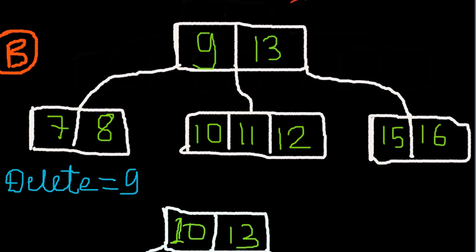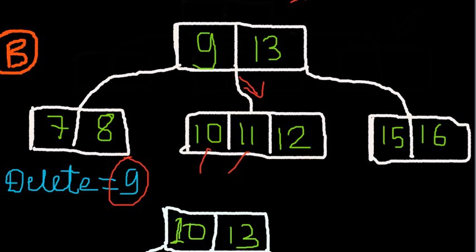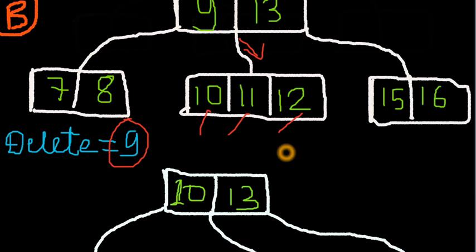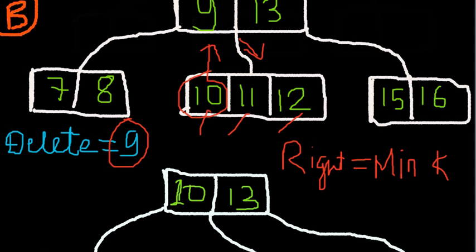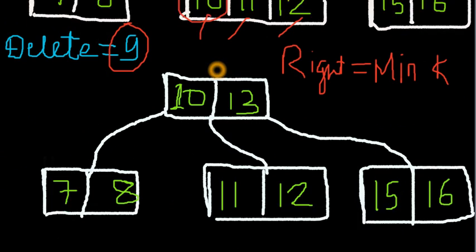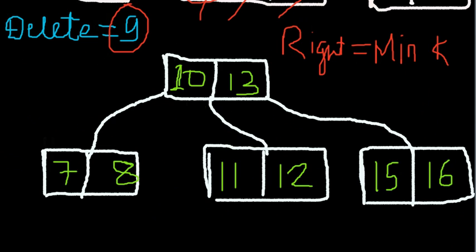Case B is the opposite of Case A. Delete 9. This time it gets help from the right side. It asks the left side: do you have keys greater than the minimum? No. It goes to the right: do you have keys greater than minimum? Yes, I have one, two, and three. Whenever you get help from the right side, take the minimum key it has. The minimum key is 10 — put it in place of 9 and delete 9. Done. 10 came here, 9 is deleted.